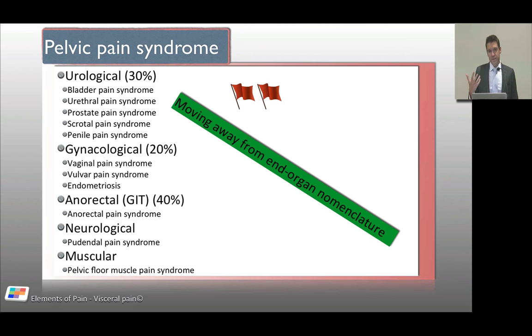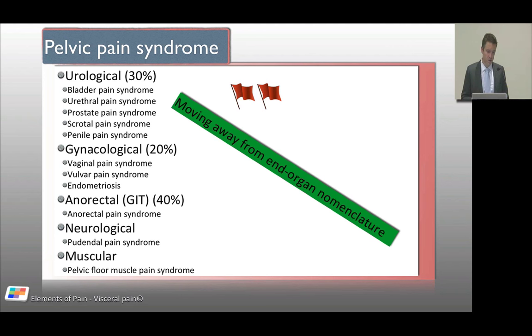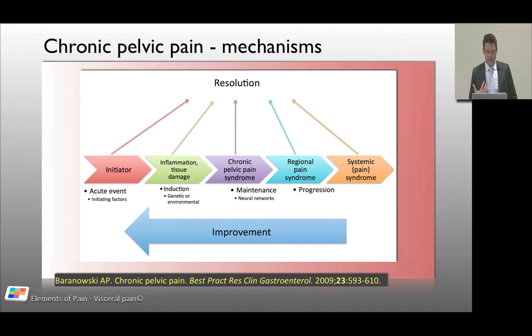We are moving away from end-organ discussion in nomenclature because, as we understand chronic pelvic pain as a central sensitization phenomenon, we need to move away from focusing on a particular organ. Exclude the red flags, get patients into a chronic disease management paradigm. The pelvic pain syndrome is subdivided by the viscera from which it arises, but we should be moving away from that end-organ discussion.